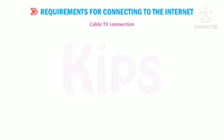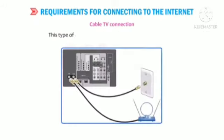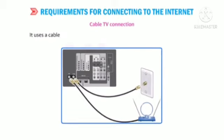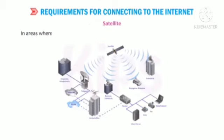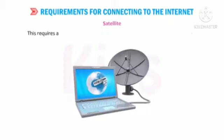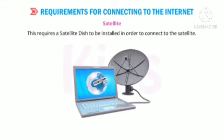Cable TV connection: This type of connection is provided through cable TV lines and uses a cable modem which provides extremely fast access to the internet. Satellite: In areas where broadband facility is not yet available, satellite connections are used. This requires a satellite dish to be installed in order to connect to the satellite.